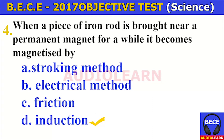Number four. When a piece of iron rod is brought near a permanent magnet for a while, it becomes magnetized by A. Stroking method, B. Electrical method, C. Friction, D. Induction. The answer is D. Induction. When a piece of iron rod is brought near a permanent magnet for a while, it becomes magnetized by induction.